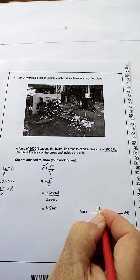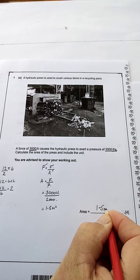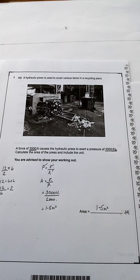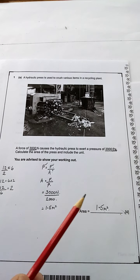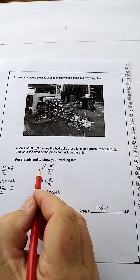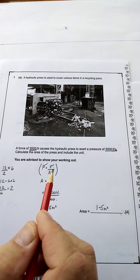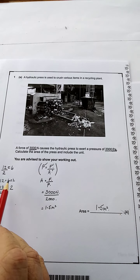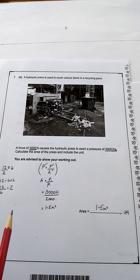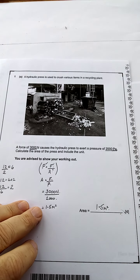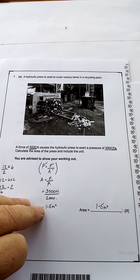So it's 1.5 meters squared. So there's that question. I've got the four marks: unit, answer, calculation, and formula. So there's our four marks. This here, don't rub this out. This is your working out. This is your paper. Never cross anything out on an exam paper.